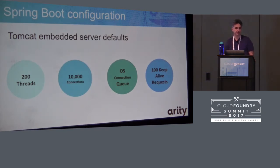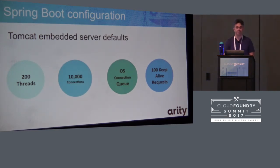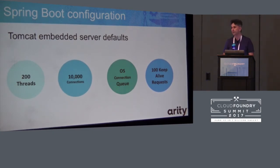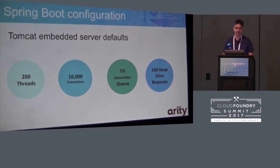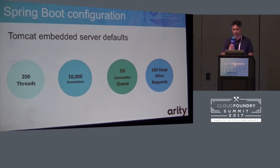The defaults are 200 threads, 10,000 connections, and 200 worker threads — these are the threads inside Tomcat that actually do the processing of incoming messages. Tomcat will accept 10,000 connections itself, and there's an additional OS component where the OS is requested to store a queue of messages, which defaults to 100. There are also 100 keep-alive requests.